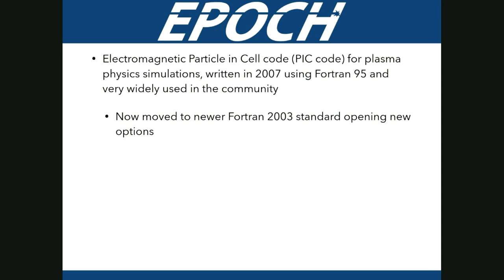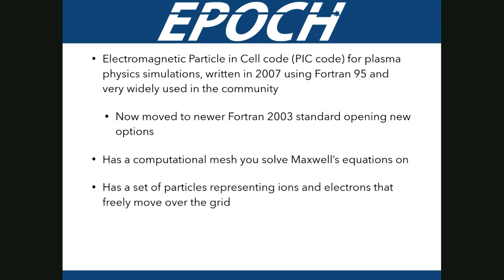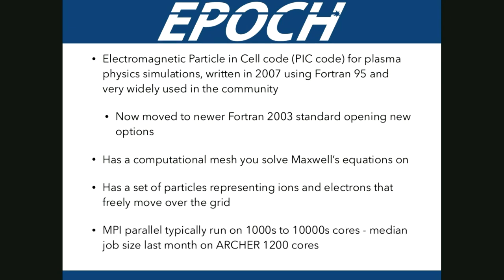We moved to the newer Fortran 2003 standard fairly recently, which opens a lot of extra options — it's a much more modern, less restrictive language than Fortran 95. PIC codes in general work by solving Maxwell's equations on a grid, with particles representing ions and electrons moving freely over that grid. These are massively parallel codes, typically running on thousands to tens of thousands of cores. Last month, the median job size for EPOC on ARCHER was 1200 cores.